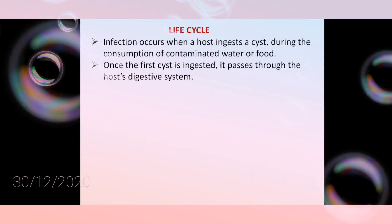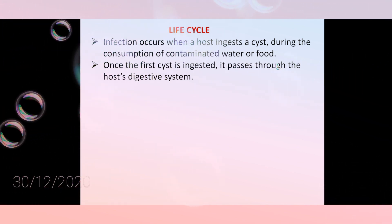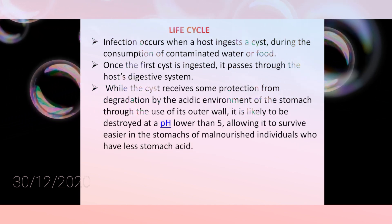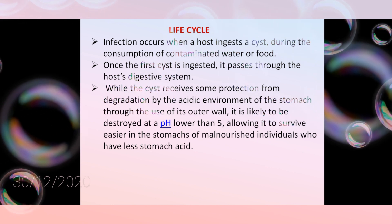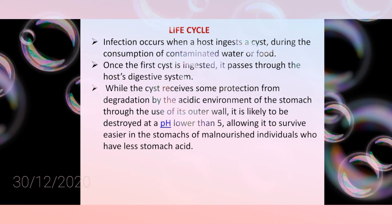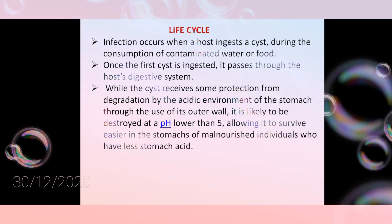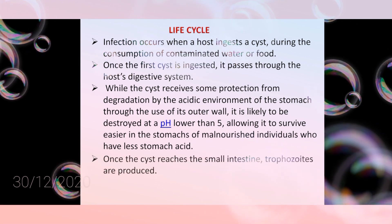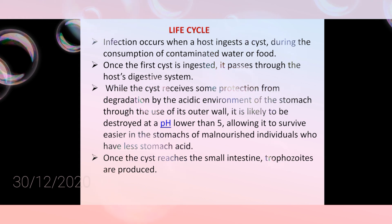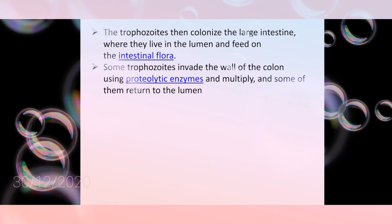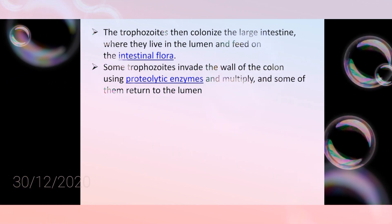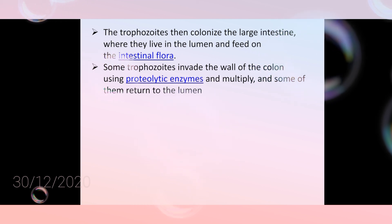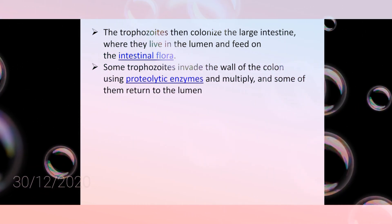Infection occurs when a host ingests a cyst through contaminated water or food. Once ingested, the cyst passes through the digestive system. While the cyst wall provides some protection from the acidic stomach environment, it is likely destroyed at pH lower than 5, meaning it survives more easily in malnourished individuals with less stomach acid. Once the cyst reaches the small intestine, trophozoites are produced, which colonize the large intestine, living in the lumen and feeding on intestinal flora. Some trophozoites invade the colon wall using proteolytic enzymes and multiply, while some return to the lumen.